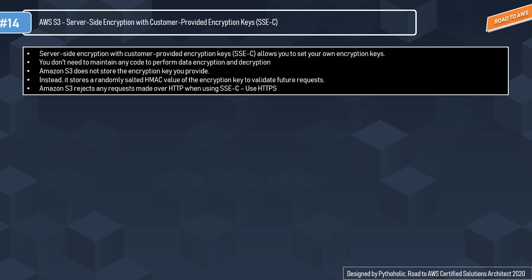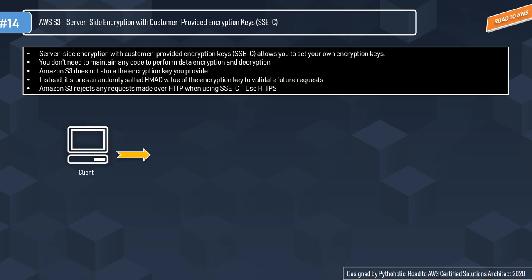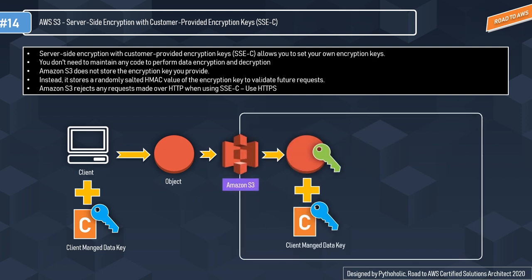For SSE-C, you set your own encryption keys and don't need to maintain any code to perform data encryption and decryption — Amazon S3 manages the encryption. Amazon S3 does not store the encryption key you provide, and Amazon S3 rejects any requests made over HTTP, so always use HTTPS. In the visualization: you have the client, a client-managed data key, and using that key the object is encrypted and stored in the bucket.